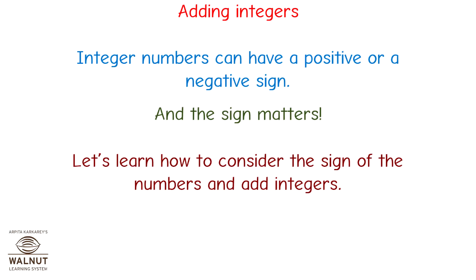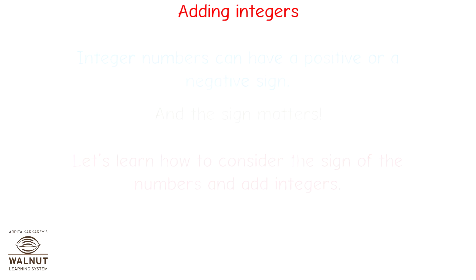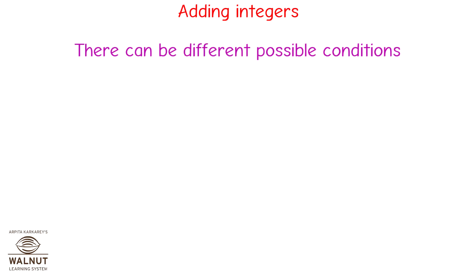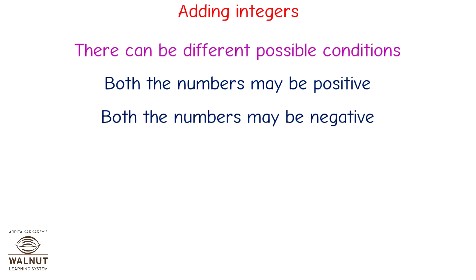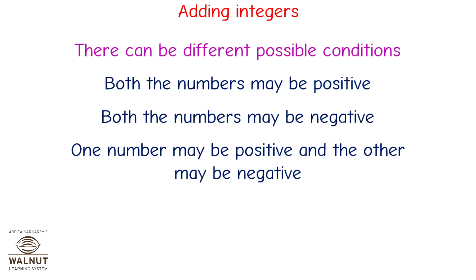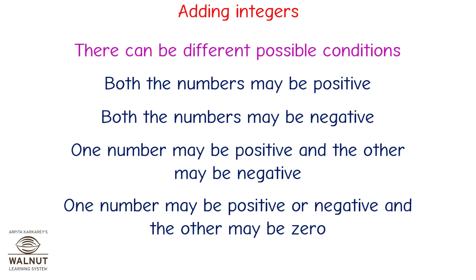Let's learn how to consider the sign of the numbers and add integers. There can be different possible conditions: both the numbers may be positive, both the numbers may be negative, one number may be positive and the other may be negative, or one number may be positive or negative and the other may be zero.